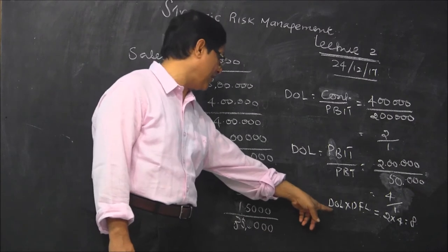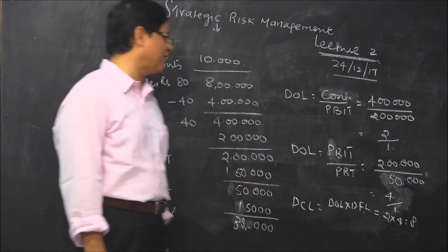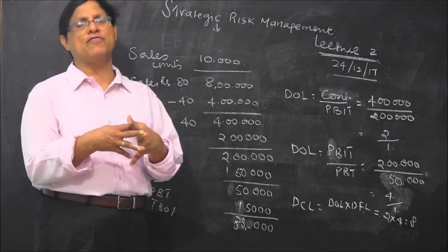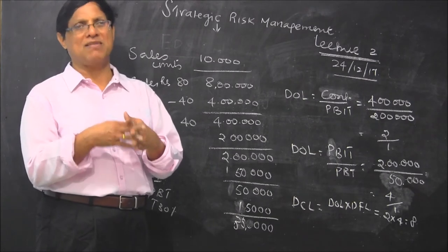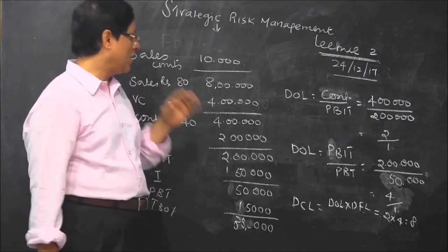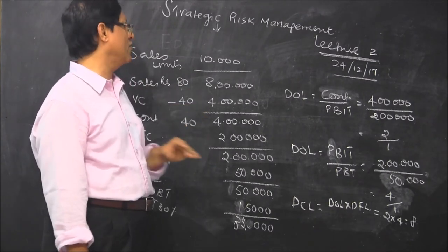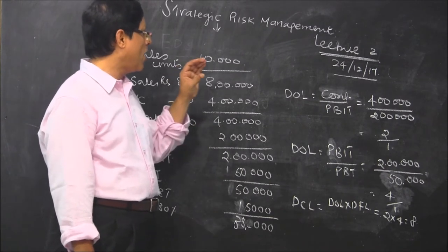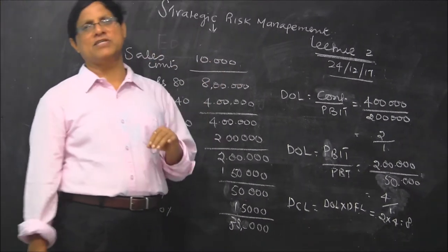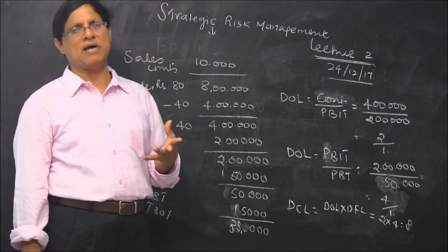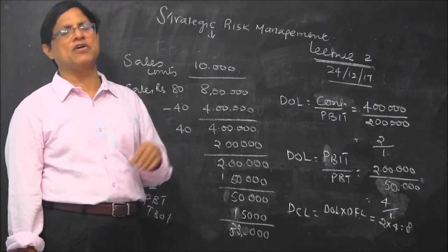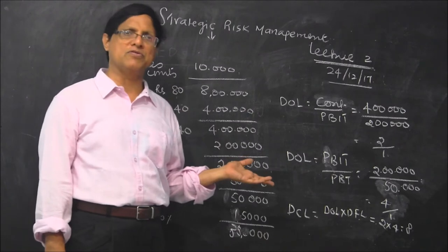And combined leverage, DOL into DFL - this product of both is called as combined leverage. Now in the next lecture we are going to understand how to manage this risk. How we can manage it? So interpretation of this risk is what we are going to see.